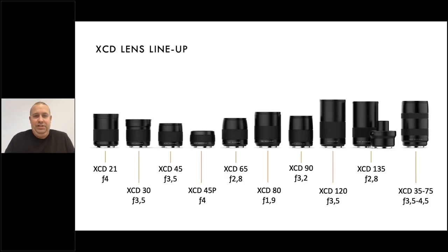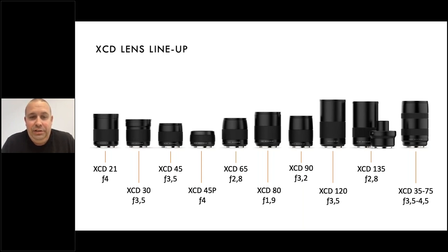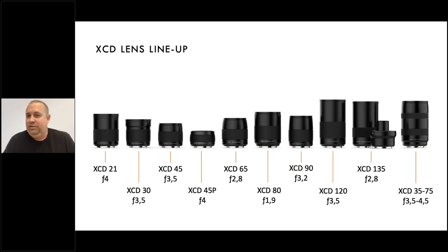Here's a summary of all the XCD lenses showing the differences — the XCD 80 at 1.9, compared to the zoom lens on the far right offering 3.5 to 4.5 along the range. Not all lenses offer the same choice of aperture, and the choice of lens can influence the aperture you choose to shoot at.